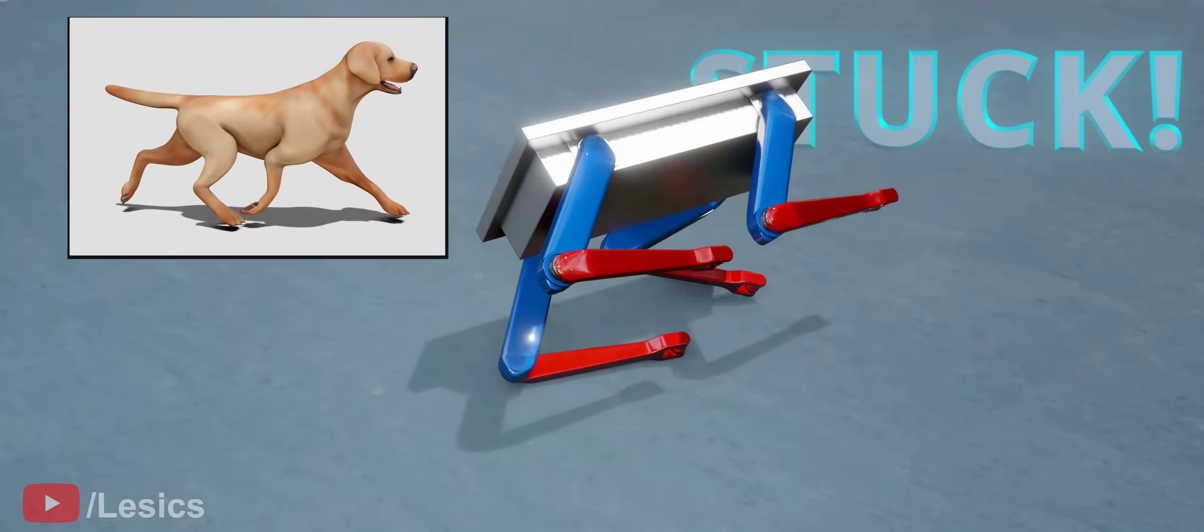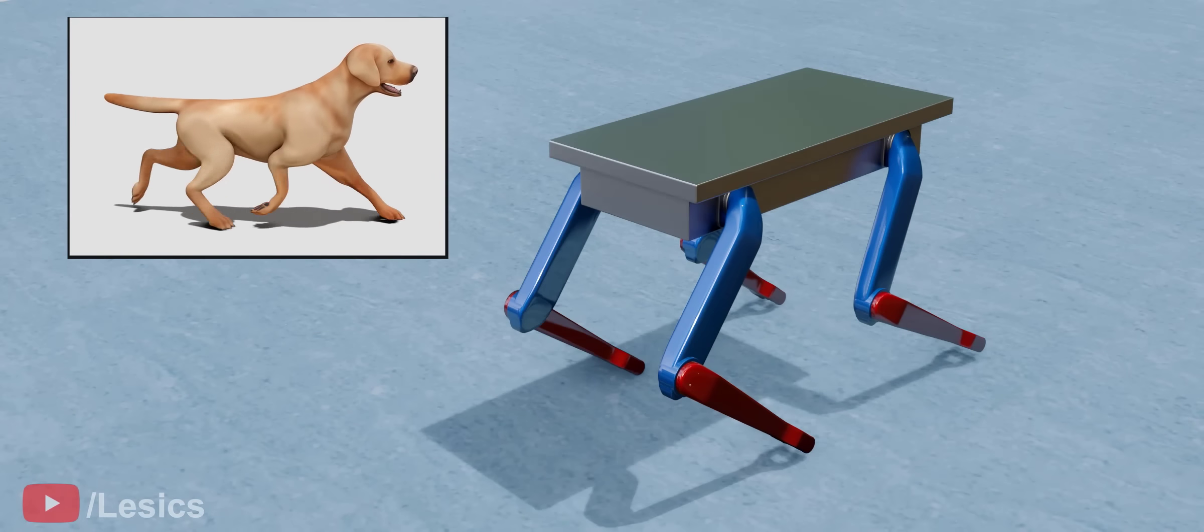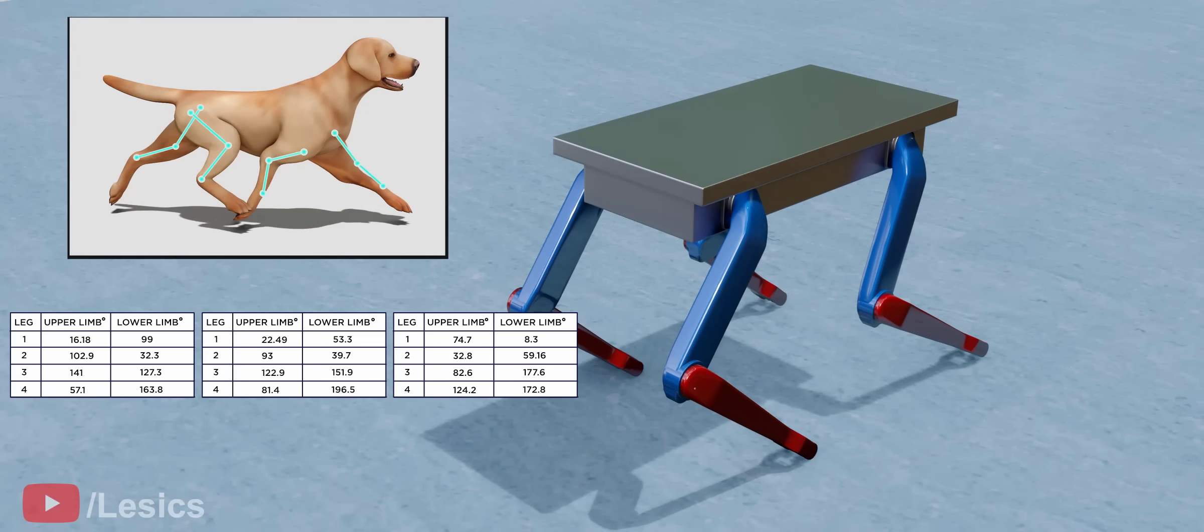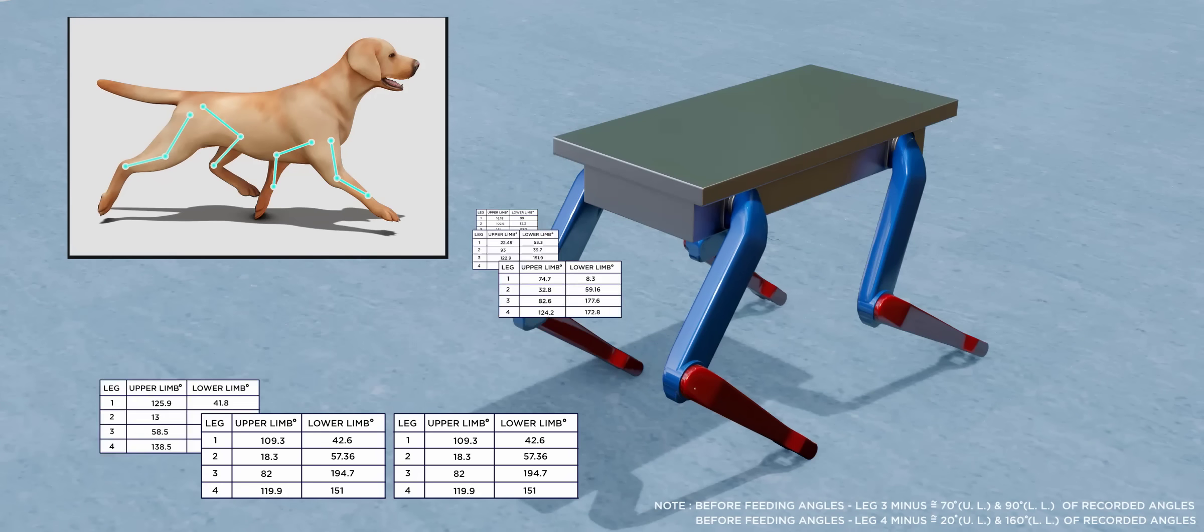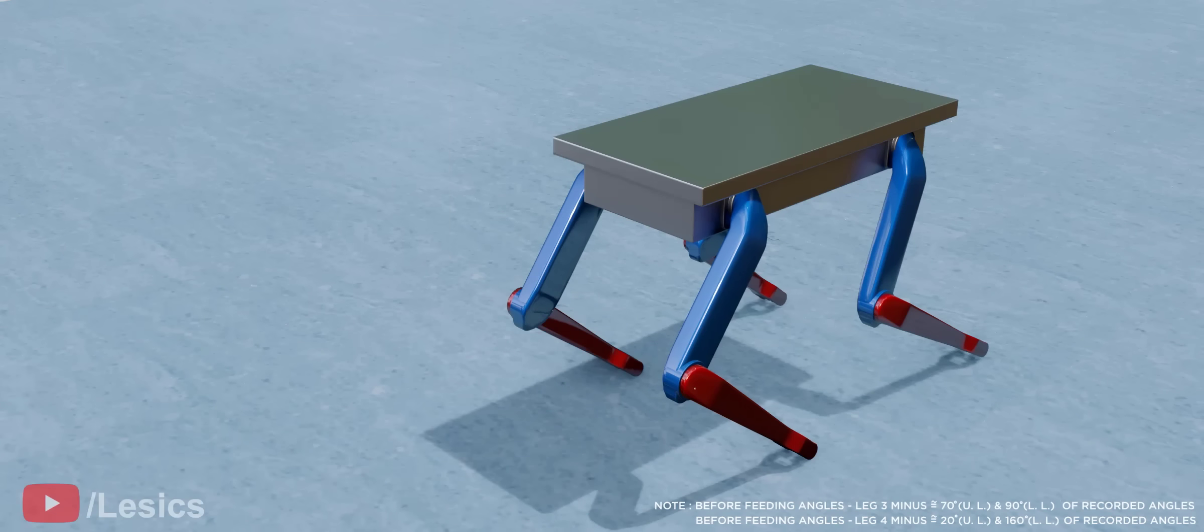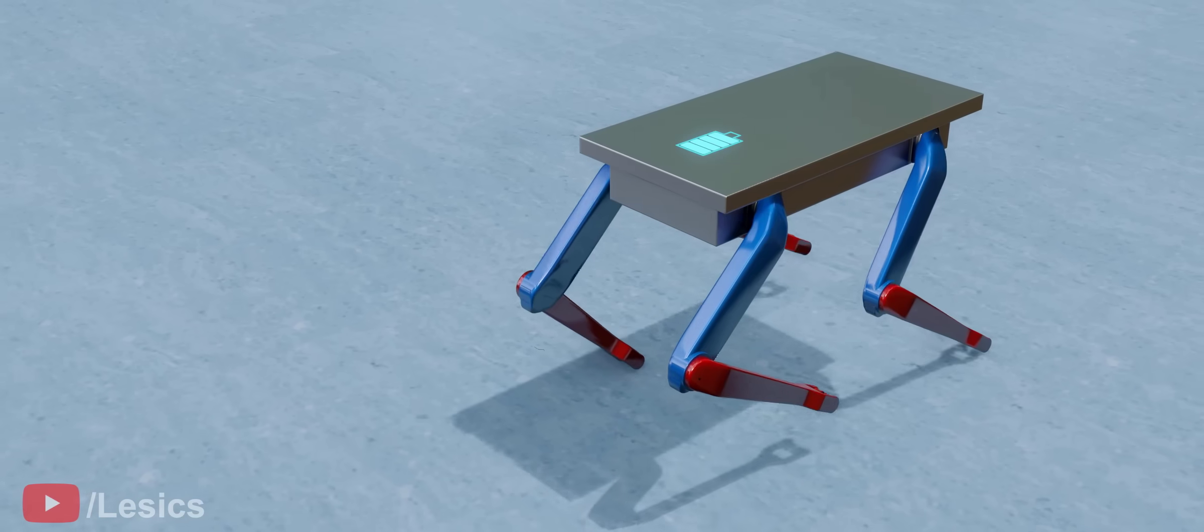We can imitate nature and resolve this issue. Here, we are recording the angles of the limbs of a dog at different instances while it walks. Now, let's feed the robot with these angles. Hooray! The robot moves forward smoothly.